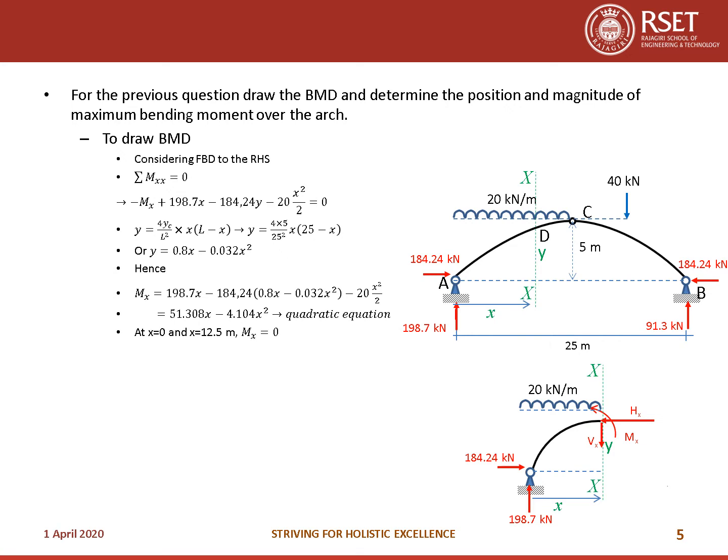At X = 0 (support A), MX = 0 — correct. At X = 12.5 (internal hinge C), MX = 0 — use this as a verification check. If the equation doesn't give zero here, there is an error in your equation.